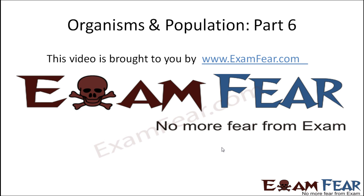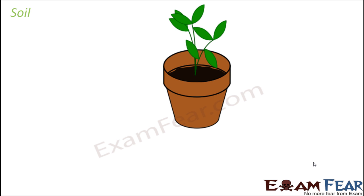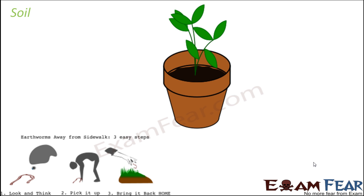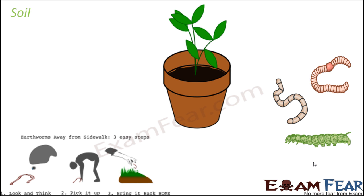This video on organisms and population part 6 is brought to you by examfear.com. Let us look at the next parameter which is soil. Soil is a very important component because it is the main reservoir of minerals, nutrients, and water for the plants.